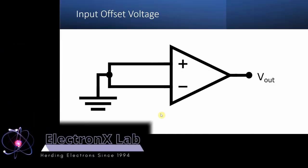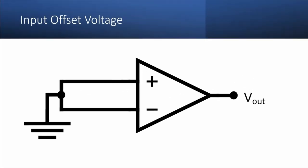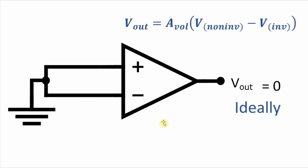Hello and welcome to the electronics lab. In this video we are going to learn about input offset voltage. Ideally, if no input is applied to an op-amp like we see here, the output voltage should be zero because Vout is the open loop voltage gain times the difference between the voltage at the non-inverting terminal and the voltage at the inverting terminal.